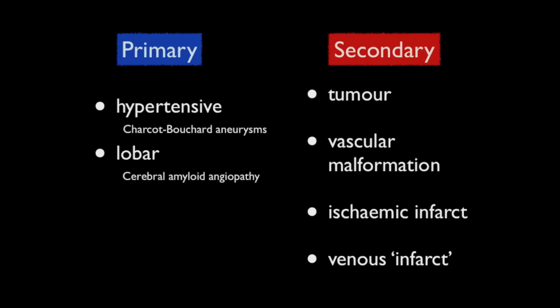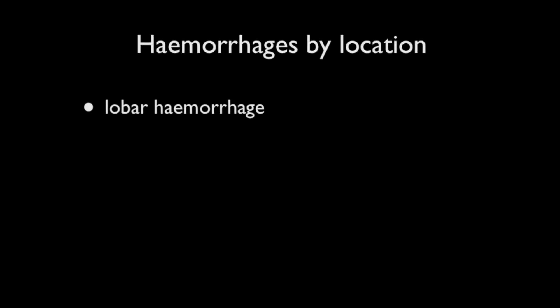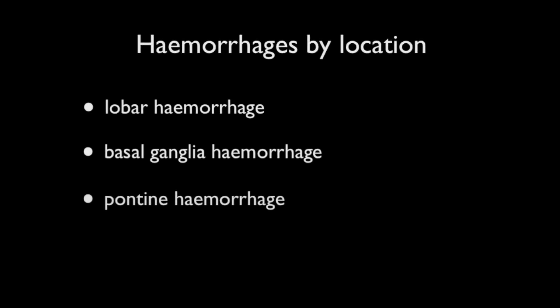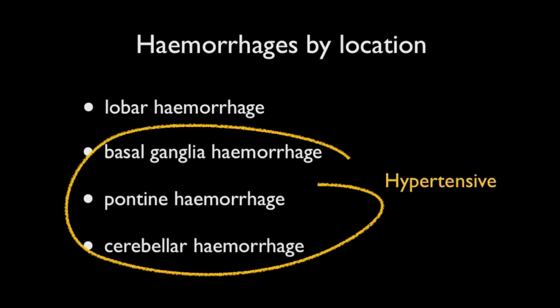In the case of lobar hemorrhages, the underlying pathology is cerebral amyloid angiopathy. Hemorrhages can also be divided according to their location into lobar, basal ganglia, pontine, and cerebellar. The last three tend to be seen in patients with poorly controlled hypertension.